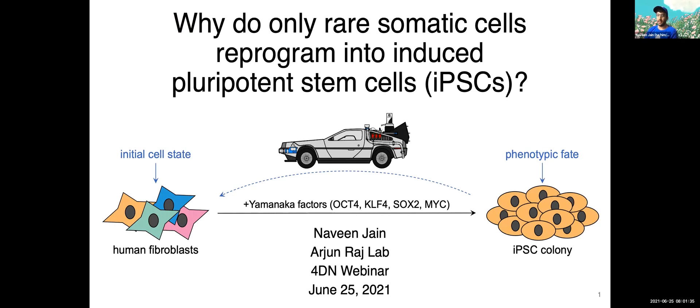My name is Naveen Jain, and I'm at the University of Pennsylvania working in the lab of Dr. Arjun Raj. Thank you for letting me speak today about my project, which is focused on studying this process by which we can reprogram somatic cells into induced pluripotent stem cells or iPSCs. I'll also be talking about some cool technologies we have that allow us to connect phenotypic fate with initial cell state.